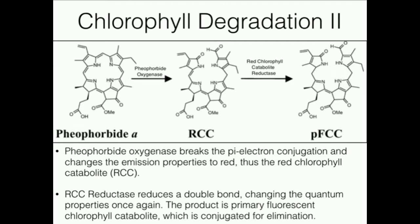Now you might say the red chlorophyll catabolite must be what causes leaves to turn red in autumn — and you'd be absolutely wrong. Yes, chlorophyll gets catabolized and you get production of red chlorophyll catabolite, but that's not what causes leaves to turn red and orange.